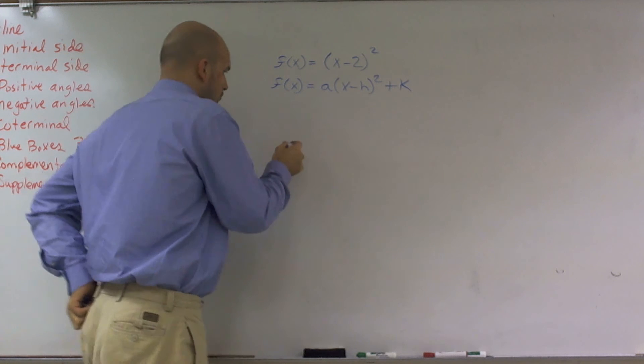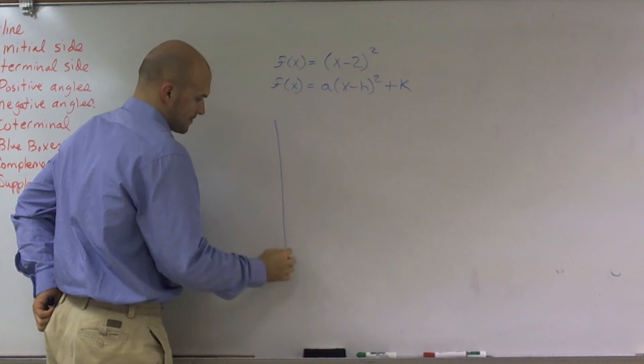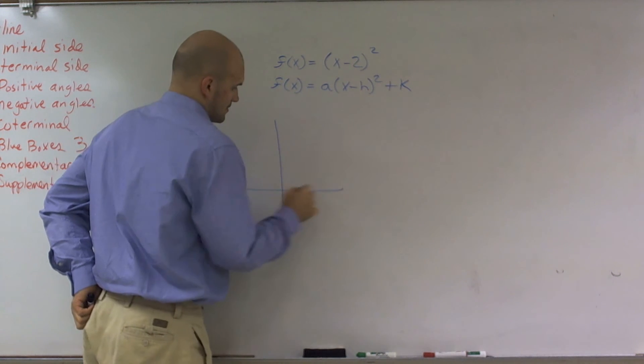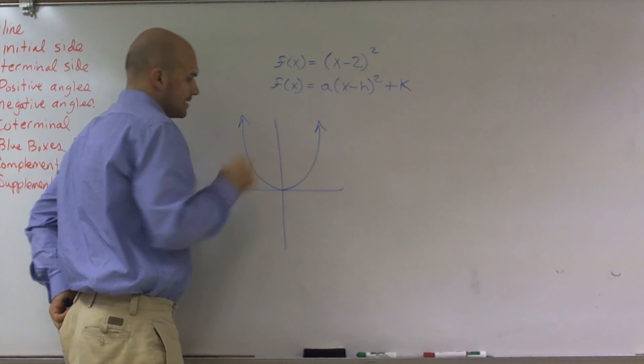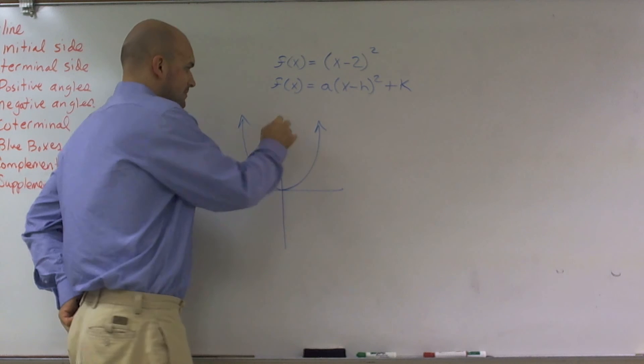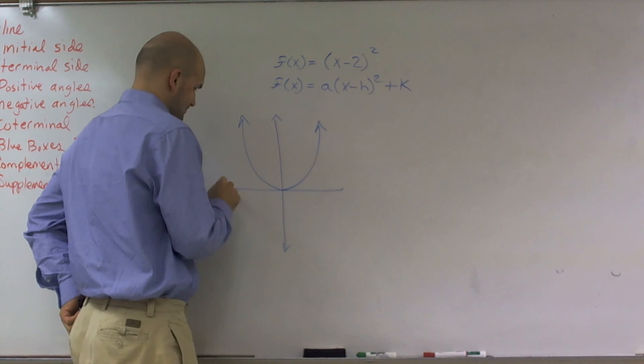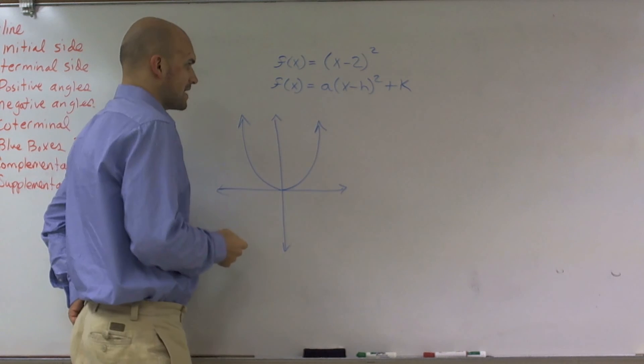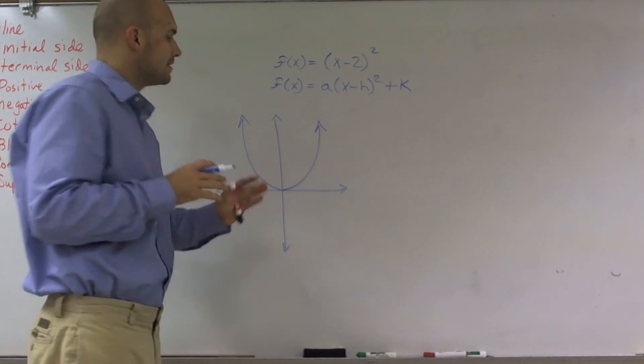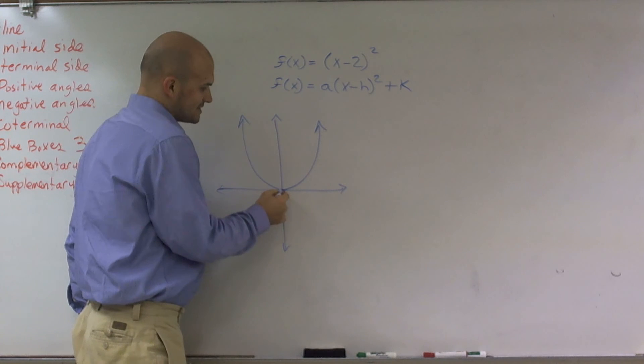So let's first look at what a parabola looks like. All right, that's just a rough sketch of my parabola. And what you guys notice is, of this parabola, it's infinitely going this way, this way. It has its vertex over at 0, 0.